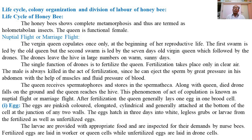The queen decides the sex of her progeny and lays eggs accordingly to develop either males or females in the colony. An important activity in the life cycle is the nuptial flight, also called the marriage flight. The virgin queen, or young active queen, copulates only once at the beginning of her reproductive life.